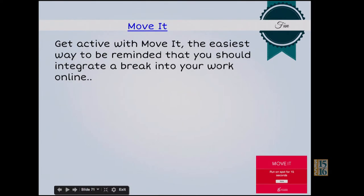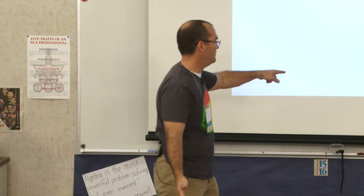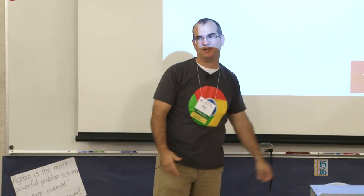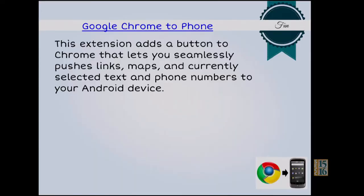Move It is another one for your mental break. You can set it for a certain amount of time and it'll say Move It and give you activities — like run in spot for 15 seconds. A teacher does it in the classroom for students. While they're working, it pops up and says get up out of your chair, stand up 10 times. It randomly pops up so you're not sitting at your desk the whole time — at least get the blood flowing. Google Chrome to Phone — this extension adds a button and it'll push your website to your phone, like a map. A lot of times I got lost going to a school. This would have been great — I could have brought up the map and pushed it out to my phone.